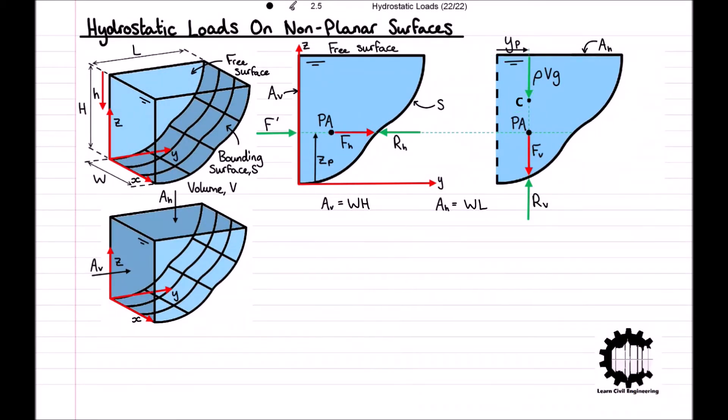Having now looked over the components of the hydrostatic load, the magnitude of the hydrostatic load F is found by F equals the square root of FH squared plus FV squared, and this load acts through the point of action PA which is the point of intersection between the horizontal and vertical lines of action.